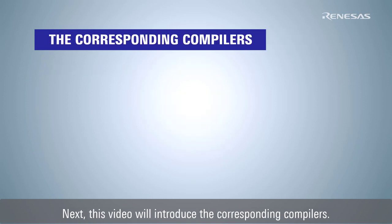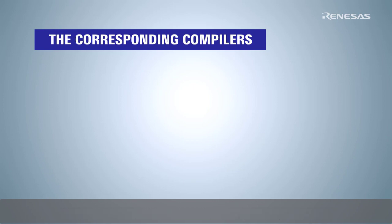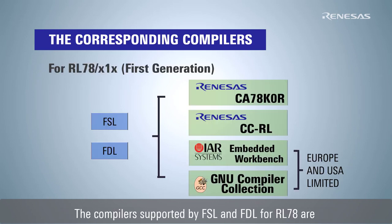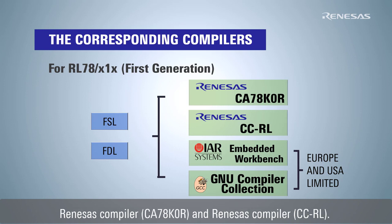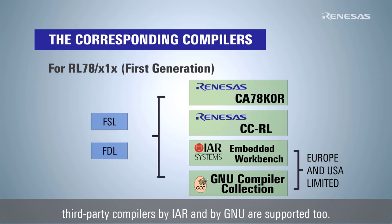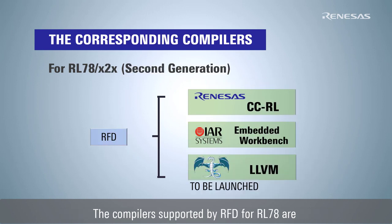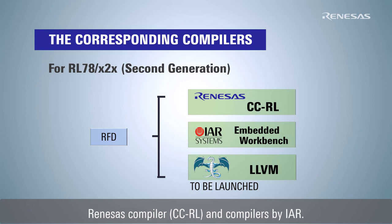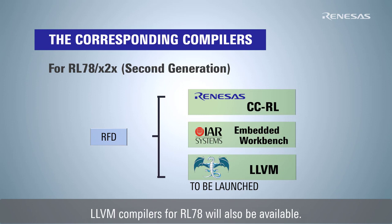Next, this video will introduce the corresponding compilers. The compilers supported by FSL and FDL for RL78 are RENESAS compiler CA78K0R and RENESAS compiler CCRL. In Europe and America, third-party compilers by IAR and by GNU are supported too. The compilers supported by RFD for RL78 are RENESAS compiler CCRL and compilers by IAR. LLVM compilers for RL78 will also be available.